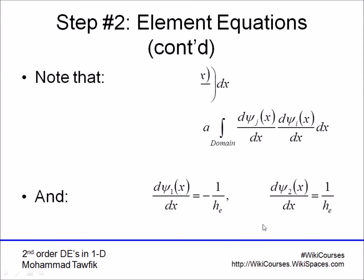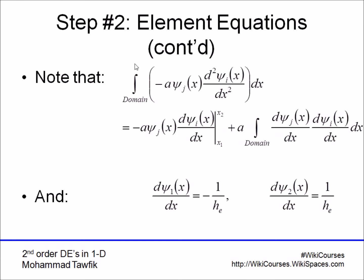Now, note that when we perform the integration, for example, for the first term, psi j times d2 psi i by dx2, we can rewrite it using integration by parts to look like this. In this form, we reduce the second derivative into a first derivative, and the other one is transformed here, and we get, as a result, a boundary term.